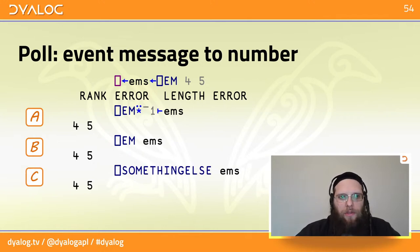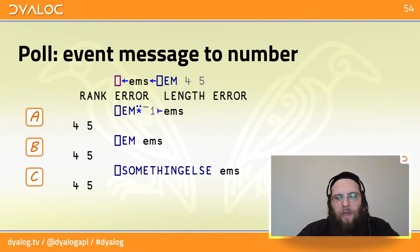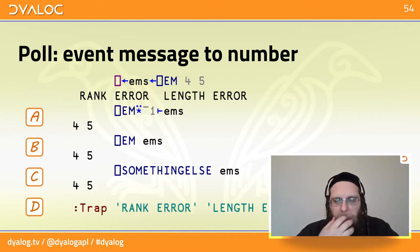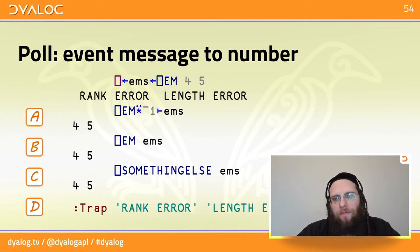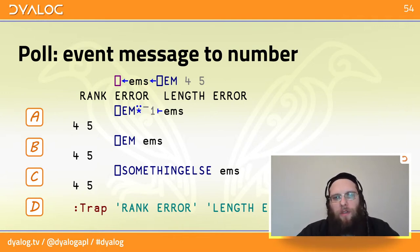A third option would be something entirely different if you have an idea. We might even be able to treat character vectors as their corresponding error number — so instead of writing colon trap 4, you could write colon trap 'rank error'. I'd love to hear your opinion. Maybe you can come up with something neater entirely.